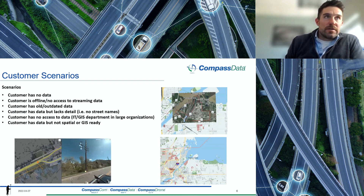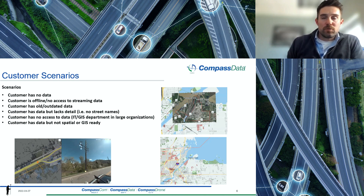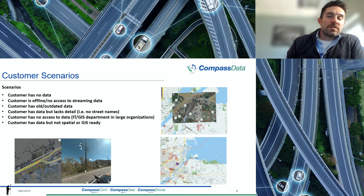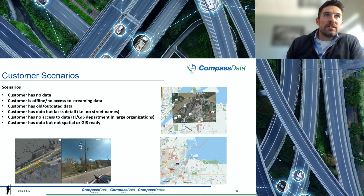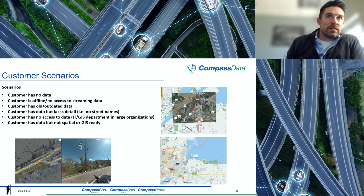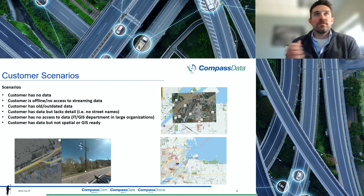Typical customer scenarios: sometimes we go to customers and they have no data. What's the use of telematics and mobile resource management tracking information if it's on a blank screen? There are scenarios where customers have to be offline — no access to streaming data — scenarios where customers have old and outdated data, or they have data but it lacks detail and they want higher-fidelity, more detailed data so they can better understand the location of their assets.